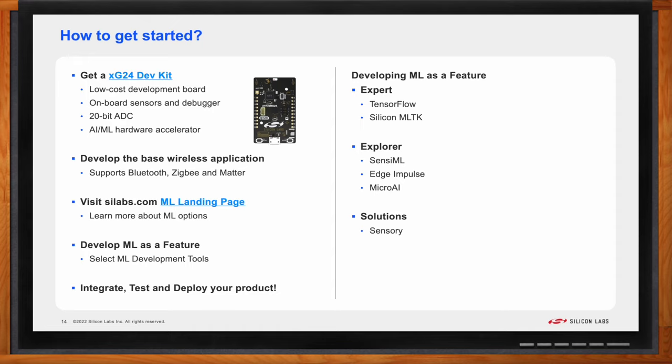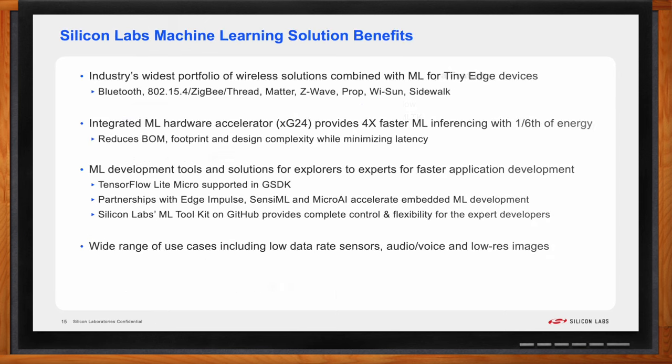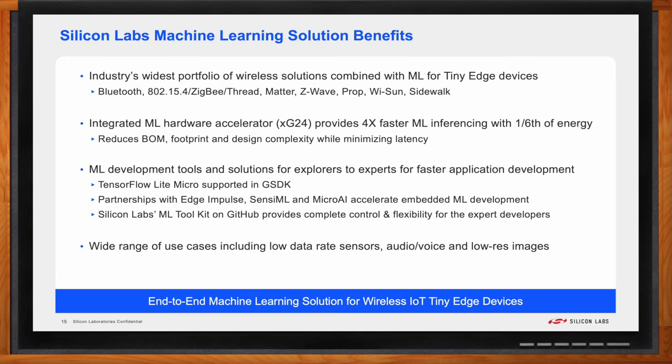All right. Well, Dan, this has been a lot to take in today. Can you recap your main points for me? I'd love to. So just to summarize with some things to remember about the benefits Silicon Labs brings to machine learning, we have the widest portfolio of wireless protocols that can be combined with machine learning for tiny ML devices. We have the first wireless SoC with an integrated hardware accelerator enabling low-energy applications with machine learning. We have a wide range of tools that fit the needs of the developer. And finally, we support a diverse set of use cases, including low-rate sensors, audio, voice, and low-resolution vision. We provide an end-to-end machine learning solution for wireless IoT tiny-edge devices.